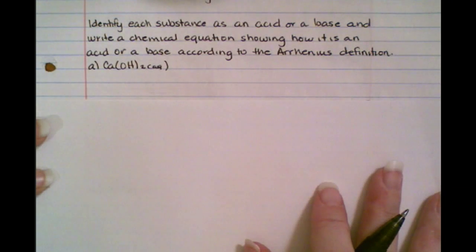If you recall, the Arrhenius definition says that if it's an acid, it's going to produce H+, and if it's a base, it's going to produce OH-. So we can look at these problems and determine whether it's going to be an acid or a base.